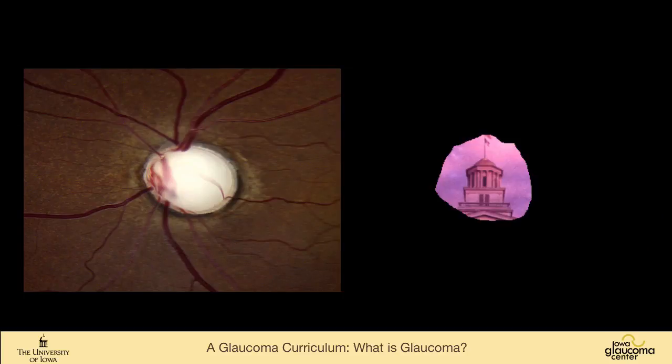Someone with end-stage glaucoma, like this patient on the left, has no neuroretinal rim visible. You can actually see how deep this cup is — it's often called beanpot cupping because it is so excavated that the blood vessels go out of focus at the base of the cup. On the right-hand side is a visual field of somebody whose field is so constricted that all they can see is a few degrees of their environment.